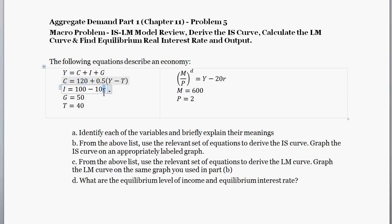Next, the real interest rate R: if you save some of your income and invest it, you can expect to earn this real interest rate. The variable I represents investment by firms, where firms purchase new capital goods or increase their inventories — both count as investment in GDP. Investment is negatively related to the real interest rate because the real interest rate represents the cost of borrowing; if it's more costly to borrow, it's more costly to invest.